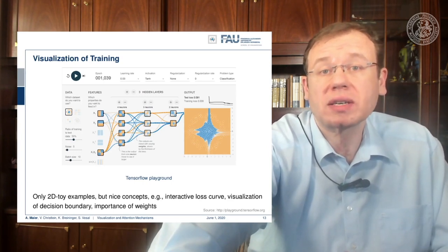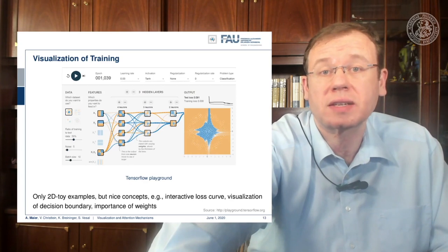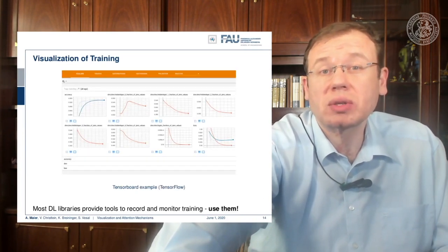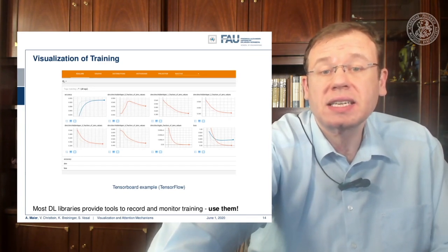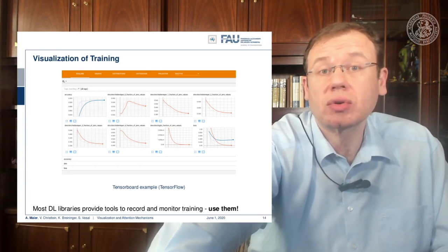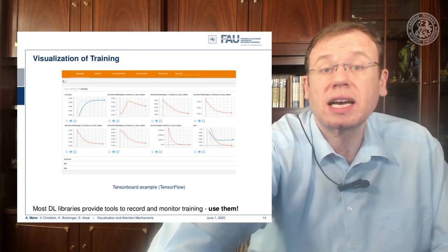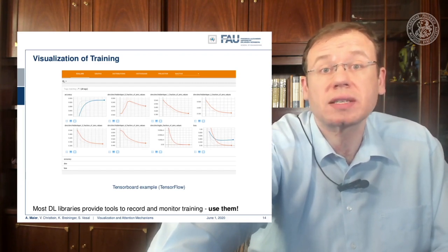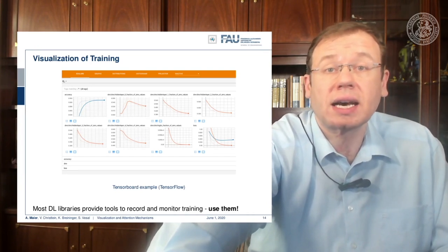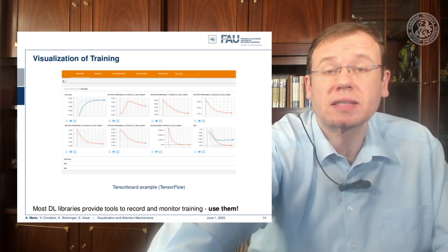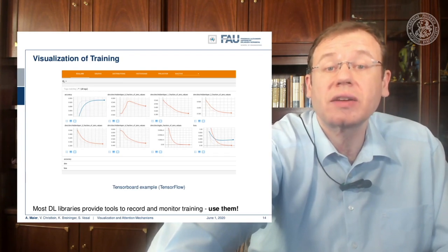The TensorFlow Playground is nice for following concepts but is limited to 2D toy examples. For large problems, tools like TensorBoard are really useful — you can monitor actual progress during training, see how the loss behaves on training and validation sets, and detect convergence issues. You can see if after 100 epochs nothing is happening with your loss, or if you have exploding gradients. This is definitely something you should use when training large networks.